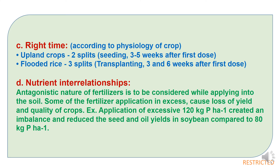The fourth aspect is nutrient interrelationship. The antagonistic nature of fertilizers must be considered when applying to soil. Excess application of some fertilizers can cause loss to yield and quality of crops. For example, application of excessive 120 kg phosphorus per hectare created an imbalance and reduced seed and oil yields in soybean compared to 80 kg phosphorus per hectare. Therefore, an optimum quantity fertilizer dose must be provided to crops.